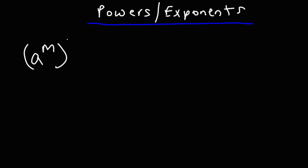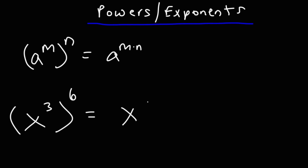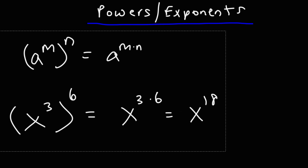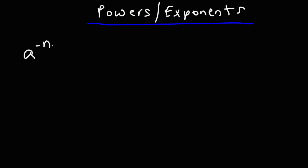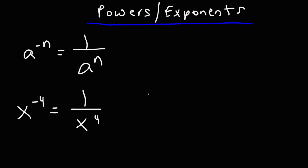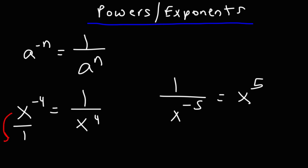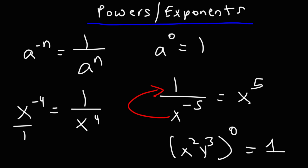When you raise an exponent to another exponent, you multiply the two exponents: x to the third raised to the sixth power is x to the 18th. If you have a negative exponent, you make it positive by moving the variable to the denominator: x to the negative 4 is 1 over x to the 4, and 1 over x to the negative 5 is x to the 5. Moving a variable from numerator to denominator (or vice versa) changes the sign of the exponent. Anything raised to the zero power equals 1.